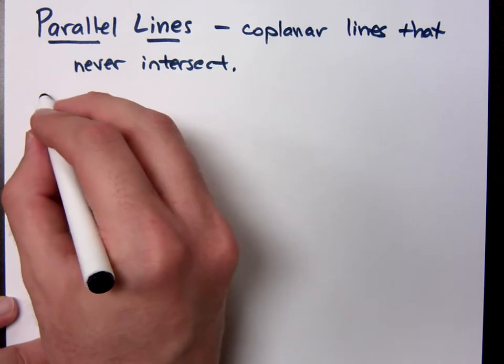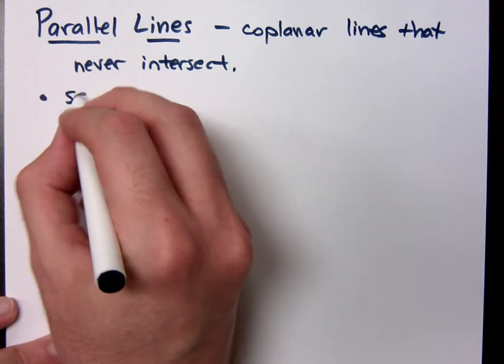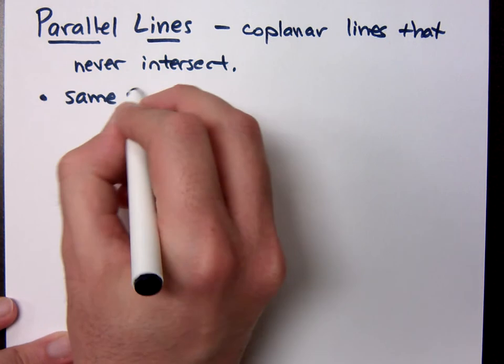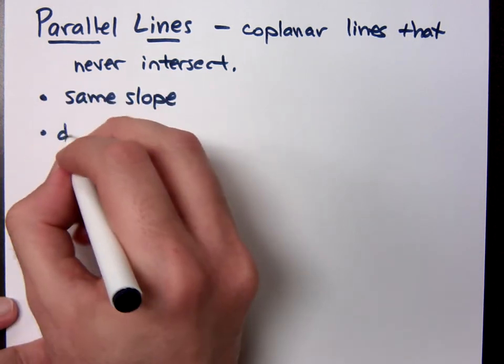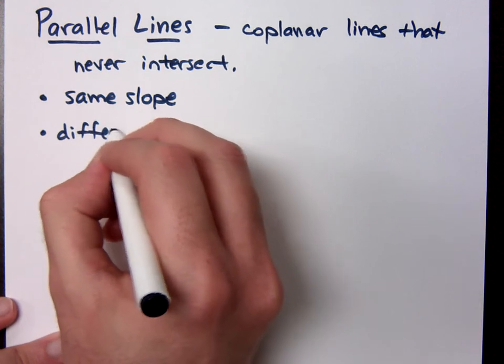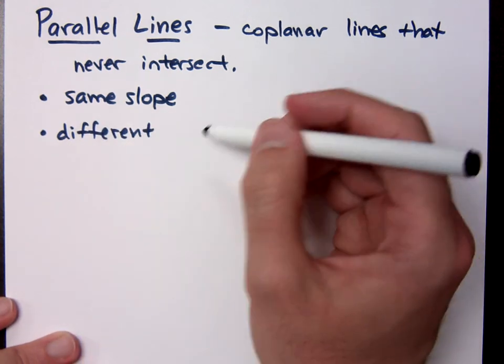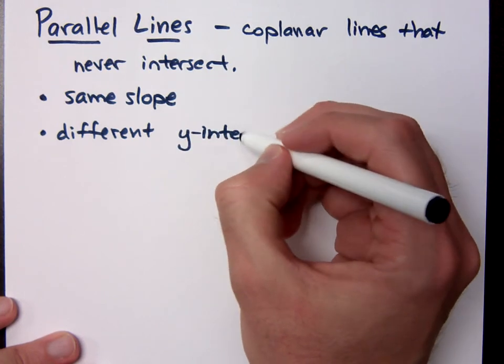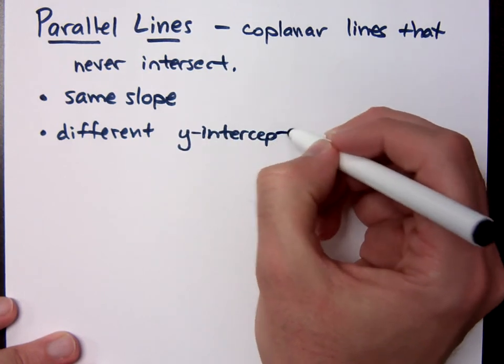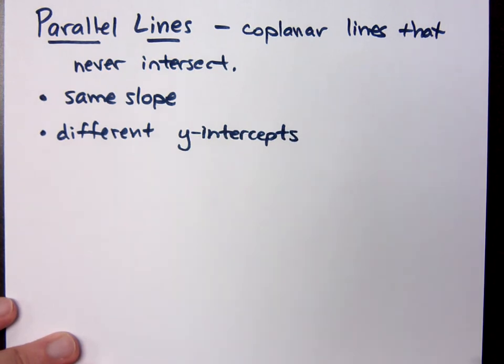And what you guys had already told me is that these guys have the same slope, but they must have different points. And the easiest way to do that, since we're talking about slope and y-intercept, is they need to have different y-intercepts.